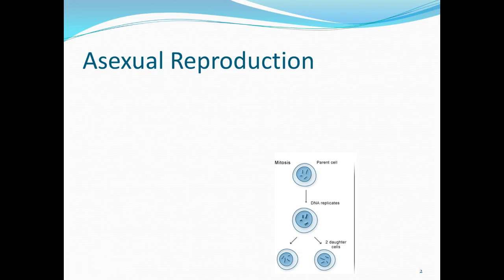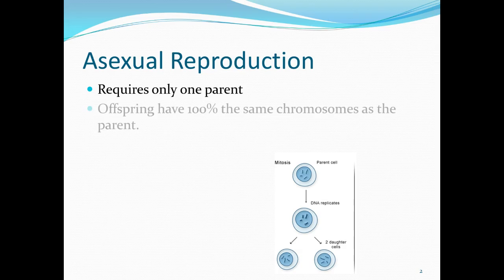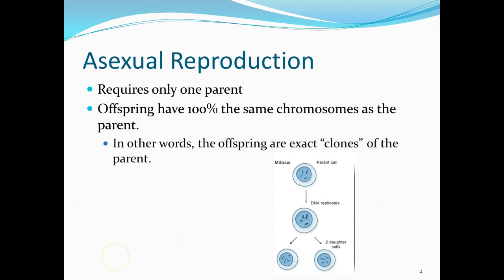Some of the important aspects of asexual reproduction are: number one, there's only one parent. One organism can reproduce itself without help from any others. But when it does this, the offspring are exactly the same as the parent. The offspring have 100% the same chromosomes as the parent. So we can see that the offspring are actually clones — that's what a clone is, an exact copy of the parent, the same genetic material.